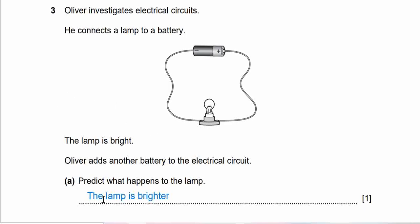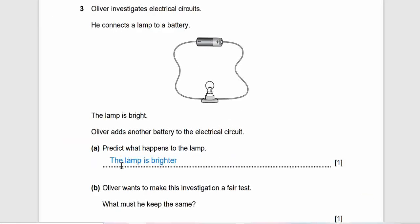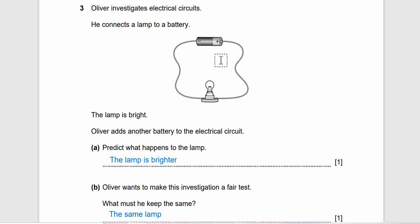One of the correct answers is the lamp is brighter. Question 3b: Oliver wants to make this investigation a fair test. What must you keep the same? So first you change the number of batteries. In an experiment we are only allowed to change one parameter or one variable. If we add the battery, the other things we have to keep the same - we can use the same lamp, same wire, same length of wire. Just write one answer, like the same lamp or the same length of wire.